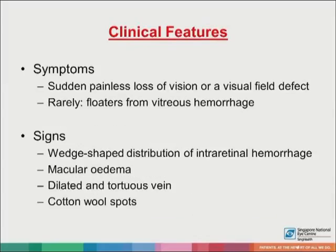The symptoms of BRVO include sudden painless loss of vision or a visual field defect. Rarely, patients may experience floaters from vitreous hemorrhage. Signs include a wedge-shaped distribution of intraretinal hemorrhage. The location of the venous blockage determines the distribution of the intraretinal hemorrhage. It is less marked if the occlusion is non-ischemic, and more extensive if the occlusion is ischemic.